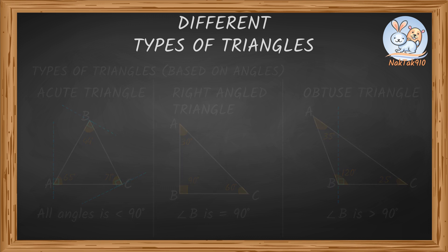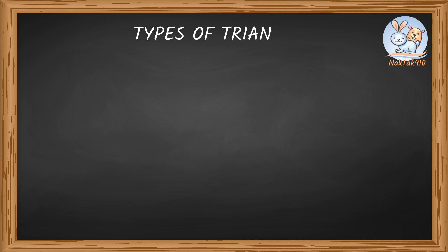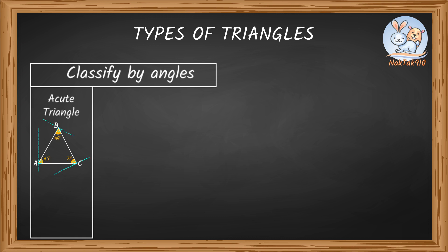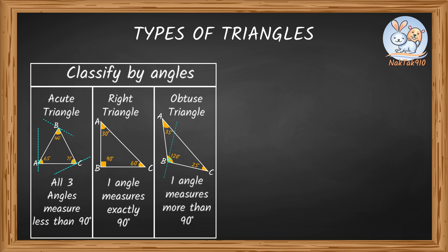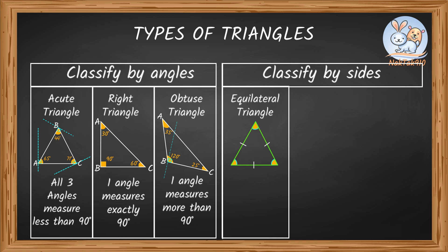Here's a summary of what we learned today. Types of triangles classified by angles: Acute triangle, which is all three angles measure less than 90 degrees. Then we have right triangle, which is one angle measures exactly 90 degrees. Then we have the obtuse triangle, which is one angle measures more than 90 degrees. We also learned about classified by sides: Equilateral triangle, which is all three sides have the same length.